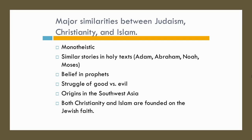They all believe in prophets. Where we're going to get a little deviation is that Islam comes after Christianity. Muslims do believe in Christ, but they don't believe that he was the son of God, and they don't believe that he was the last prophet — for them, the last prophet is Muhammad. The struggle between good and evil is a major theme in all of these religions. They all originate in Southwest Asia, what we would consider today the Middle East. Both Christianity and Islam are founded on the Jewish faith, and we will touch on Judaism when we talk about Western Europe.